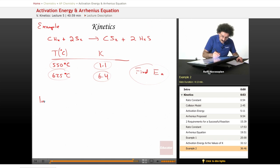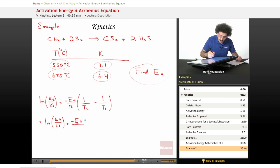Let's take the logarithm of K2 over K1. Let me write it again. The natural log of K2 over K1 is equal to minus E sub A over R, 1 over T2 minus 1 over T1. And again, temperature is in Kelvin. So, this is equal to the logarithm of 6.4, that's this number, over 1.1 is equal to minus E sub A over 8.31 times...